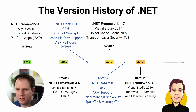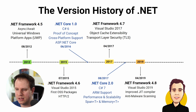.NET Core 2.0 was released on August 14th, 2017, a few months after the .NET Framework 4.7 and Visual Studio 2017 releases. It also brought C# 7. The major features were ARM support for IoT scenarios, improved performance and scalability, including support for the Span<T> and Memory<T> types.